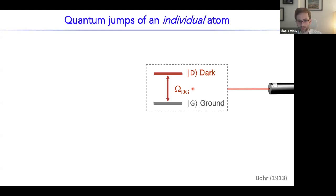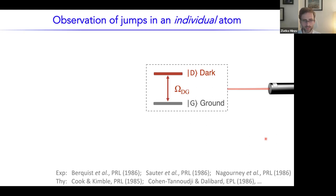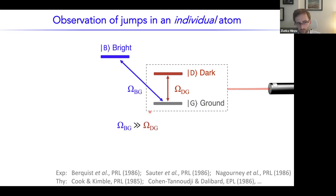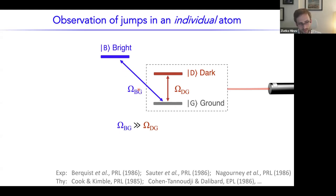How does one observe this actual transition in practice? Since it's quite difficult to observe directly, it was realized about 70 years later that one could, in a single ion system, exploit a third level. Rather than detecting the fluorescence of the atom directly, the population of the ground level can be indirectly read out by an auxiliary level of the atom, which we call a bright level because it's strongly coupled to the environment — it fluoresces, it shines. That level is coupled to the ground level by another Rabi drive — a second laser that's blue — with a strength omega_BG that's much larger than the Rabi rate between the ground and dark levels, so that one can do a fast readout.